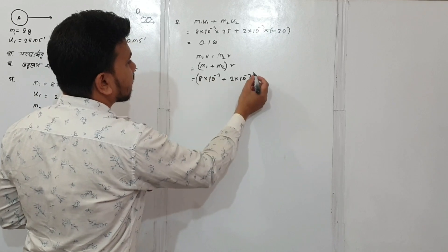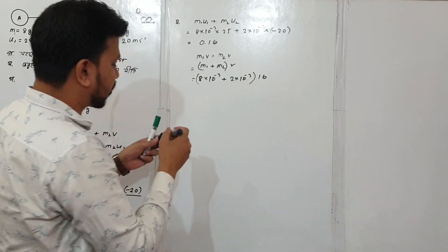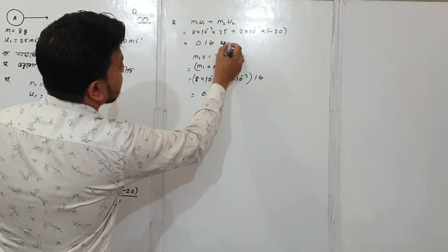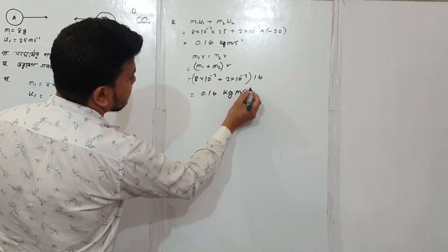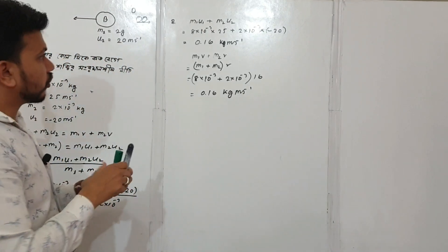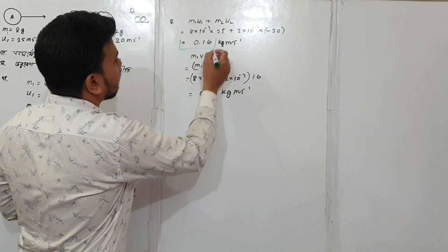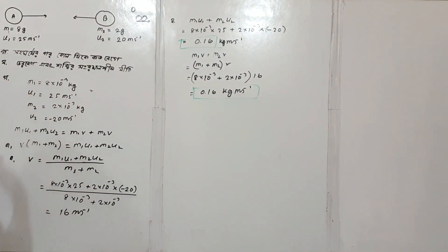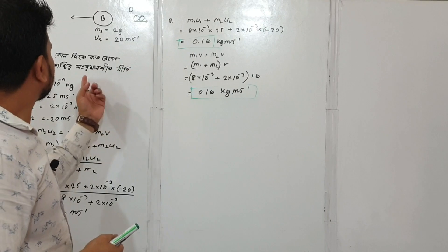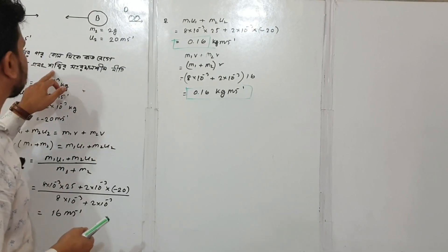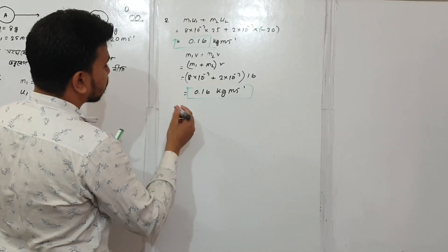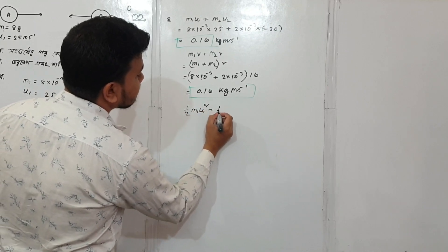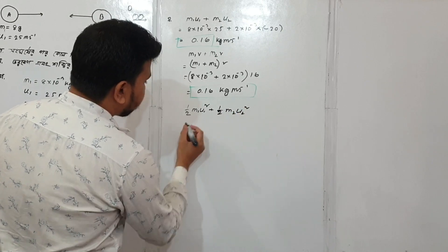The result comes out to 0.6 kg·ms⁻¹. Now we move on to the kinetic energy part. The initial kinetic energy is half m1u1 squared plus half m2u2 squared.